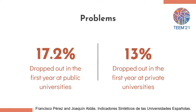In the case of the first course, which is very important data, more or less about 17% of students drop out in the first year at public universities. In the case of private universities like Ramon Llull, Deusto, and Comillas, this percentage is more or less about 13%.